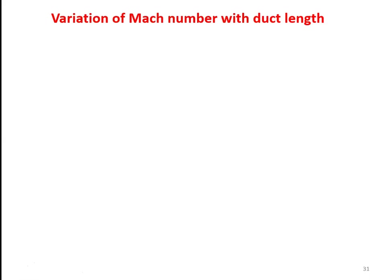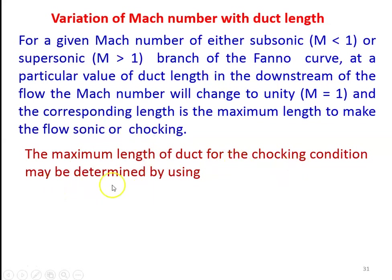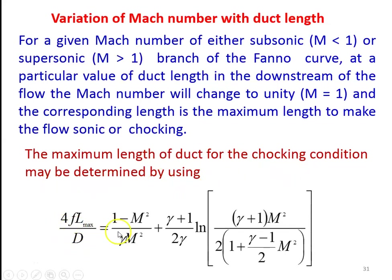For variation of Mach number with duct length: for a given Mach number, either subsonic (M < 1) or supersonic (M > 1), the branch of the Fanno curve at a particular duct length in the downstream of the flow will change the Mach number to unity. If you have subsonic flow at the entry of the duct, the Mach number will increase and become M = 1. If you have supersonic flow at the entry, the Mach number will decrease and finally reach M = 1 for the choking condition. The corresponding length is called the maximum length for the choking condition. The maximum length of the duct may be determined using: 4FL_max/D = (1 − M²)/(γM²) + (γ+1)/(2γ) × ln[(γ+1)M² / (2(1 + (γ−1)/2 × M²))].